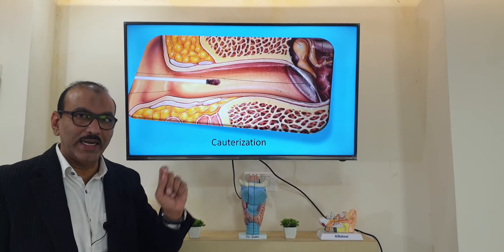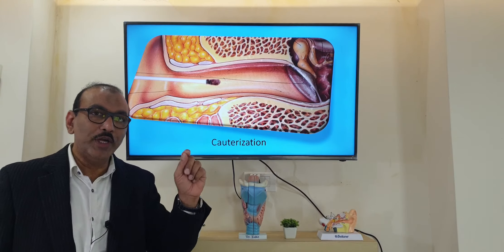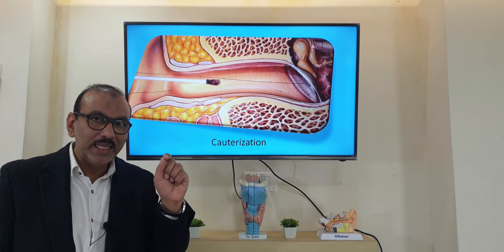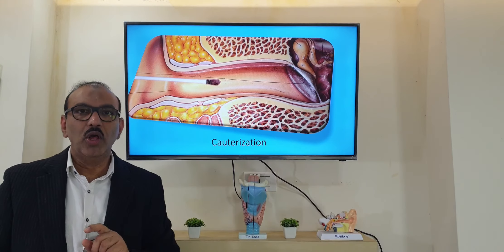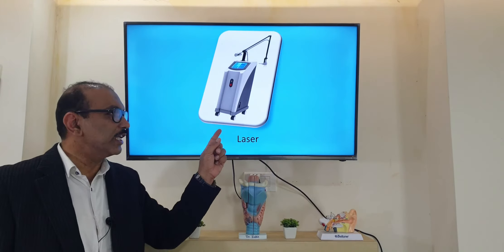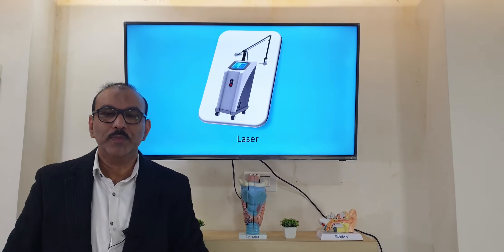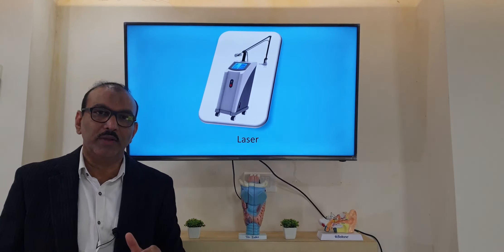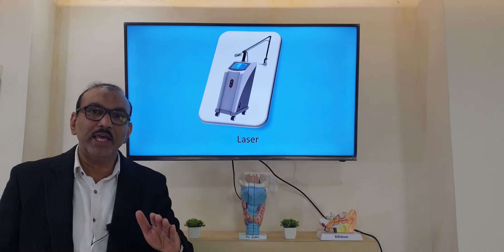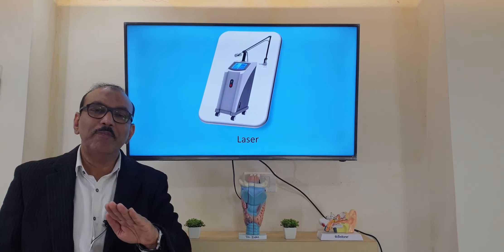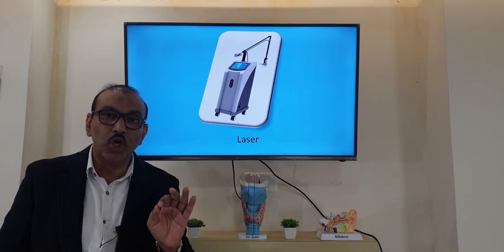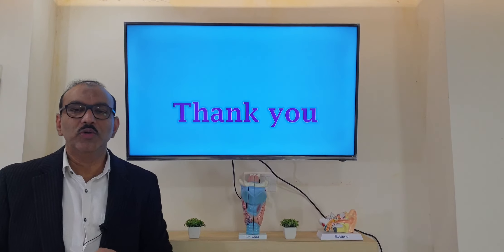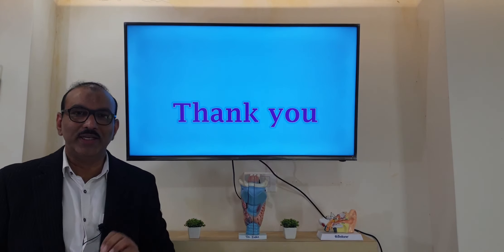The granulation tissue must be cauterized — this can be done by chemical cautery with silver nitrate. If diffuse, the superficial layer can be scraped and bleeding areas cauterized, or KTP laser cautery can be used. If all these measures fail, the last option is surgery: the outer layer of the eardrum is removed and replaced with a graft. Most patients respond to the above treatments. That is about granular myringitis.